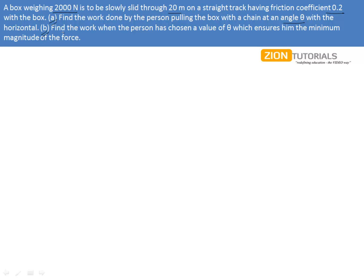(b) Find the work when the person has chosen a value of θ which ensures him the minimum magnitude of force.